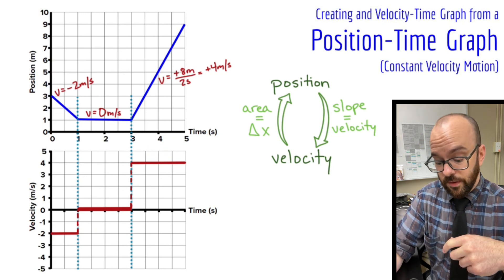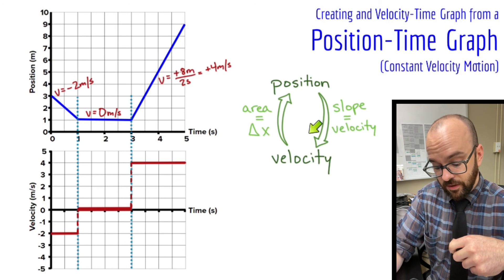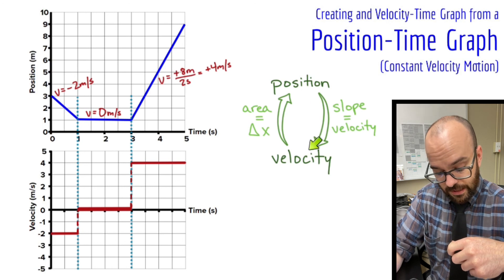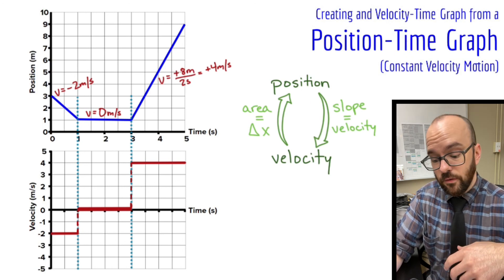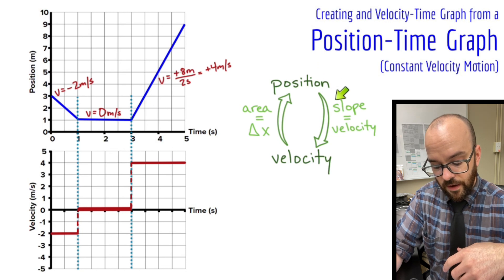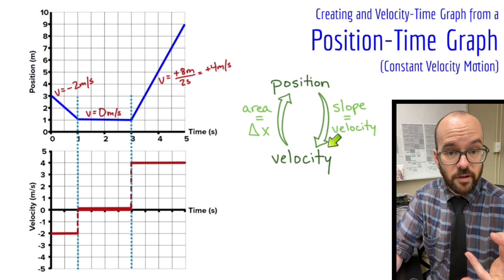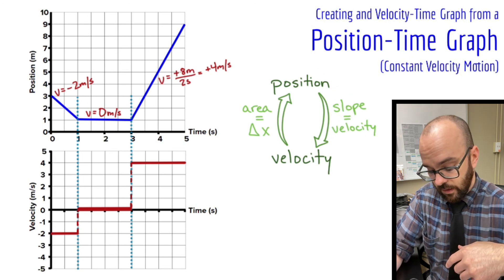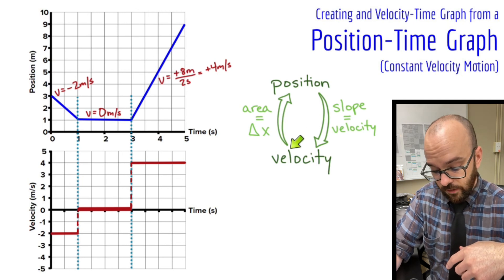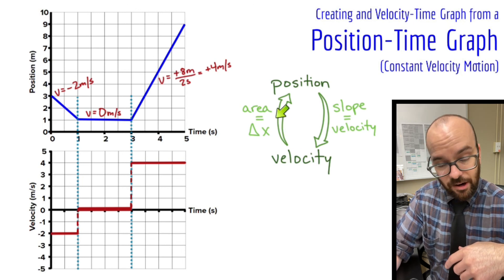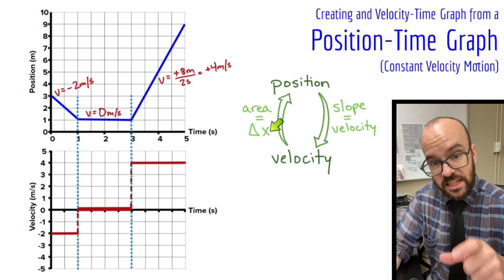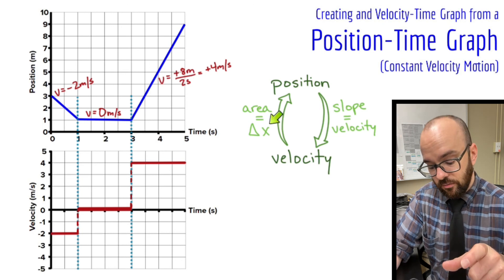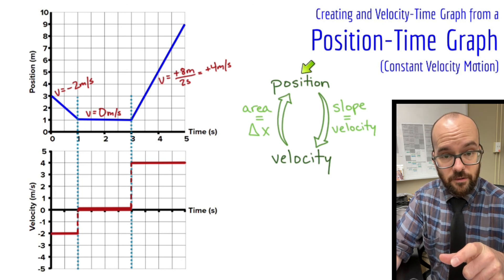That's how you convert between position time graphs and velocity time graphs in constant velocity motion. Remember: when you have a position time graph, find the slope to get velocity and plot it on your velocity graph. If you have a velocity time graph, find the area under each section to get the displacement for each interval, which you can use to create a position time graph.